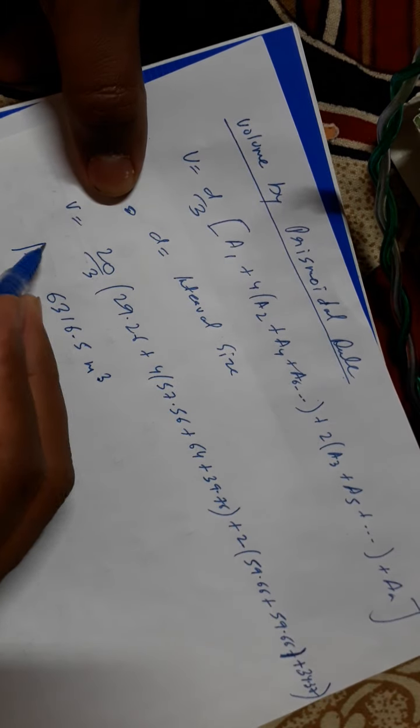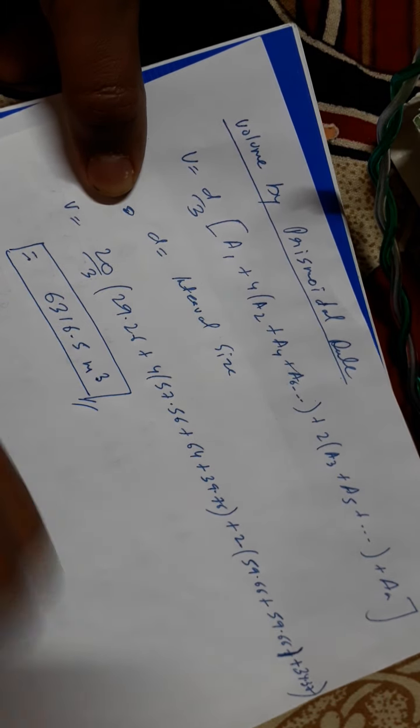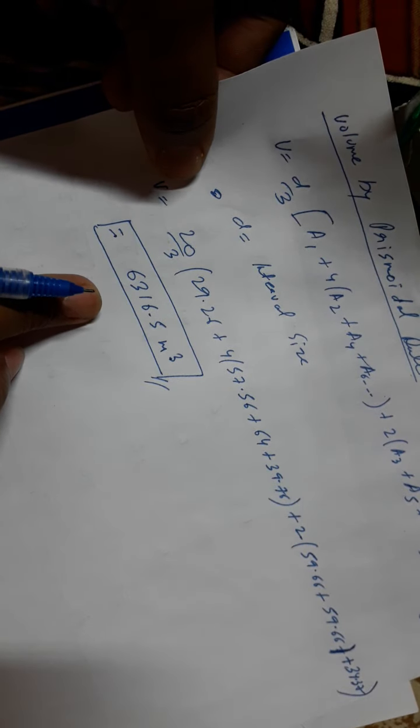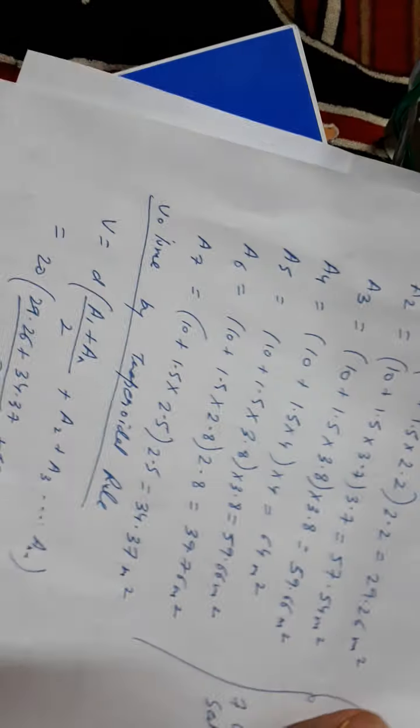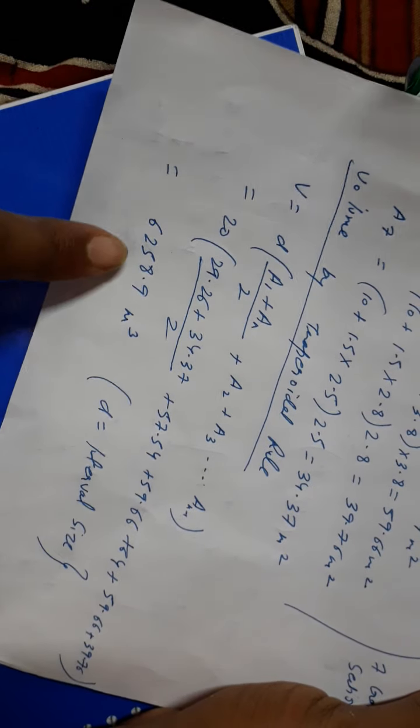So these are our final values. And this was our, this is by prismoidal rule, and this was by our trapezoidal rule. Thank you friends, thank you.